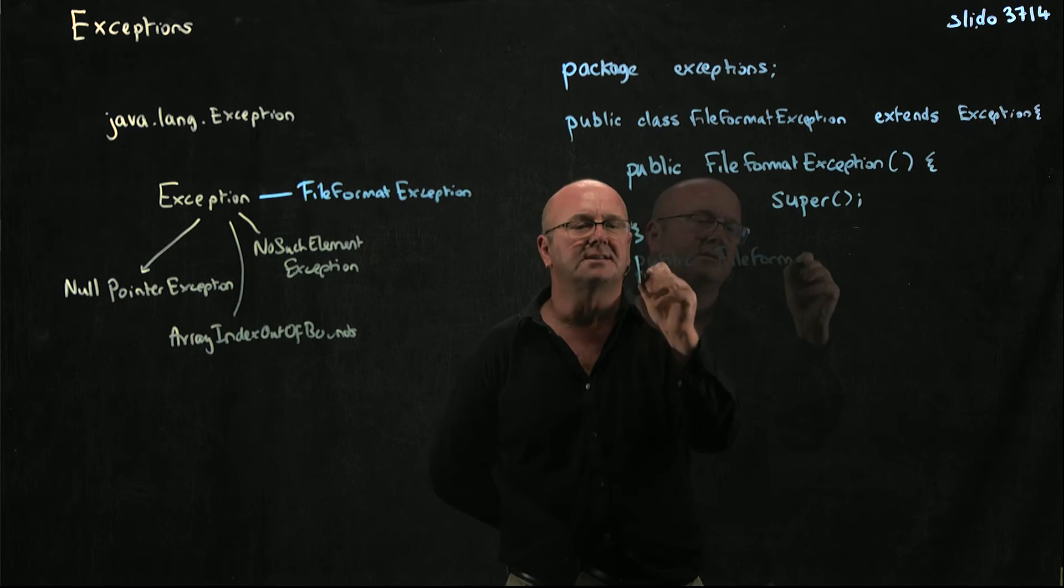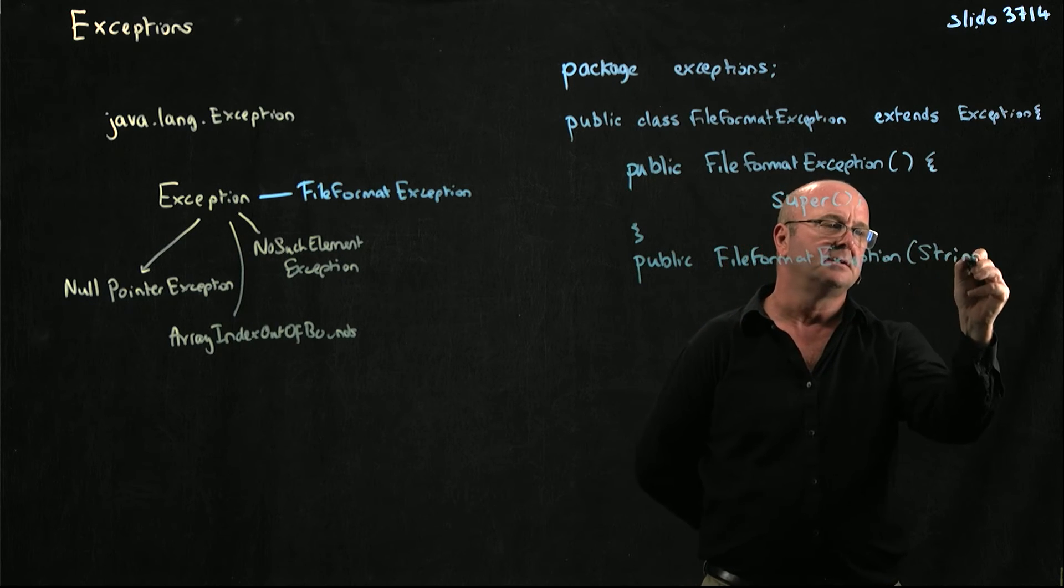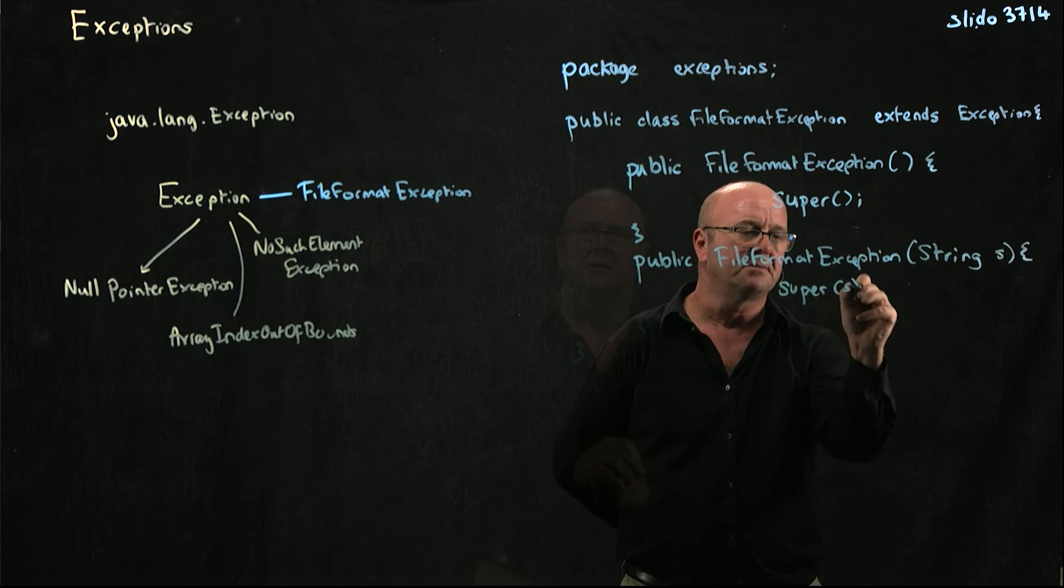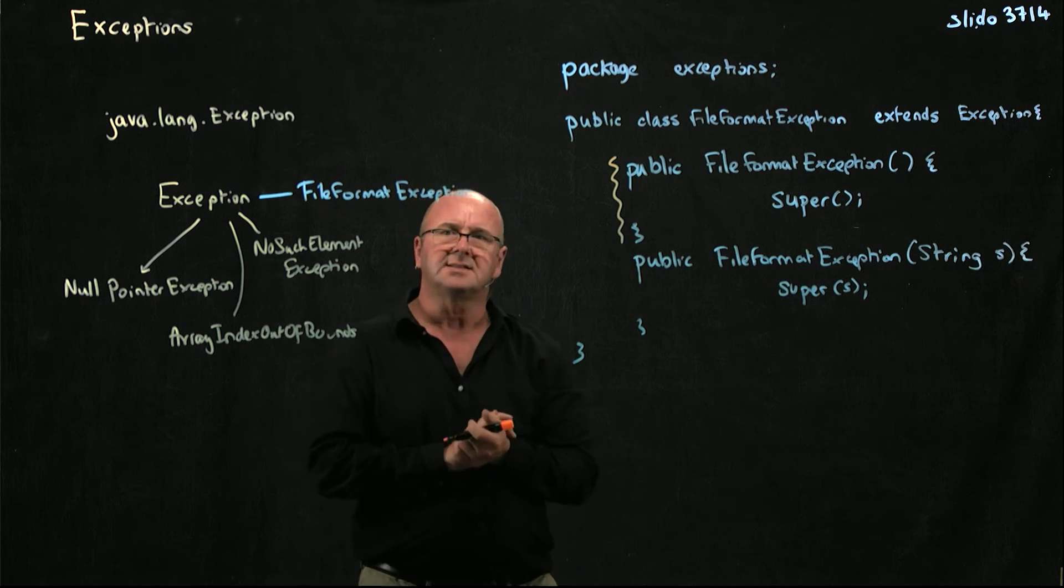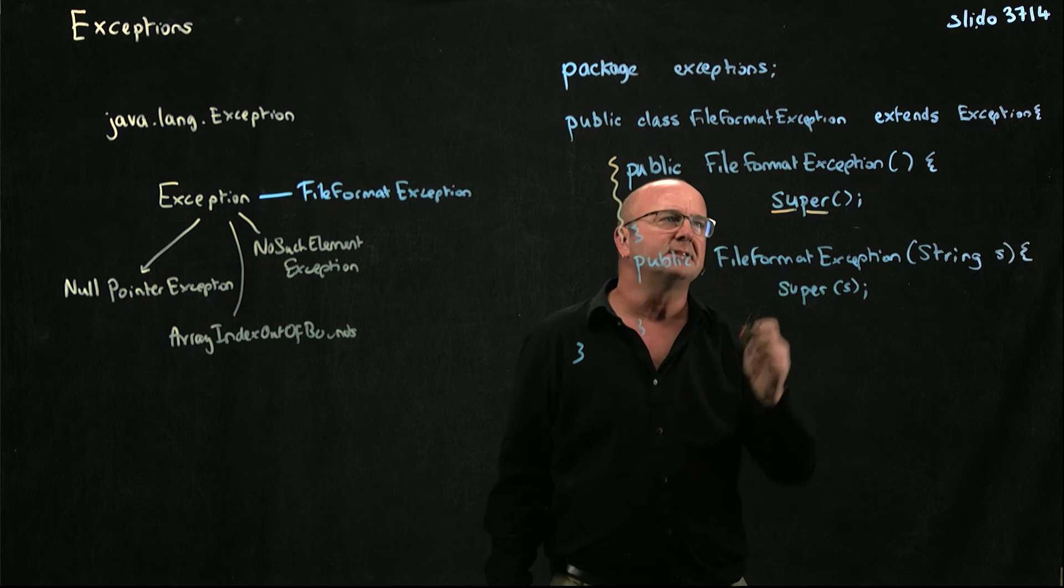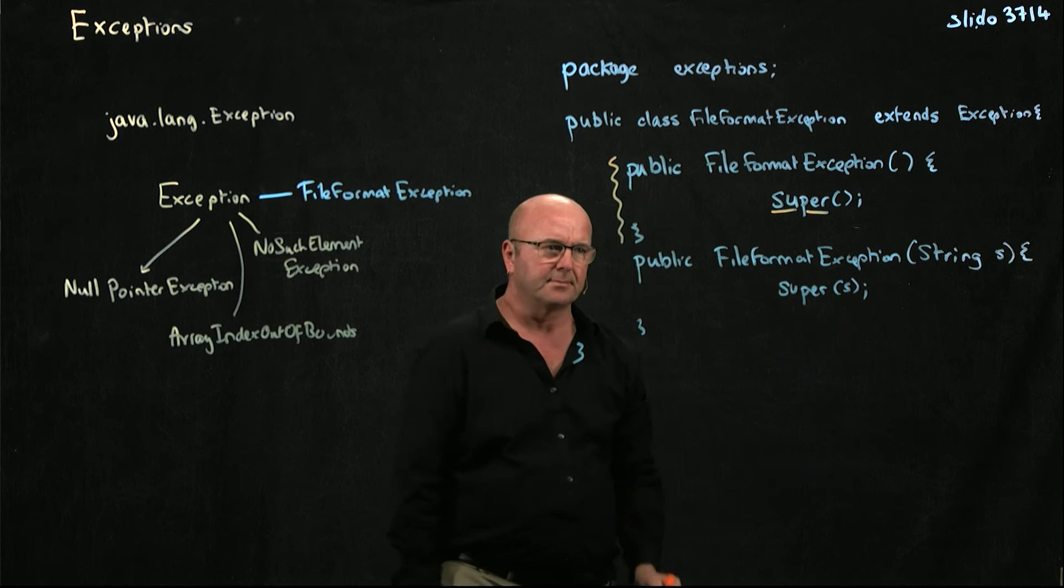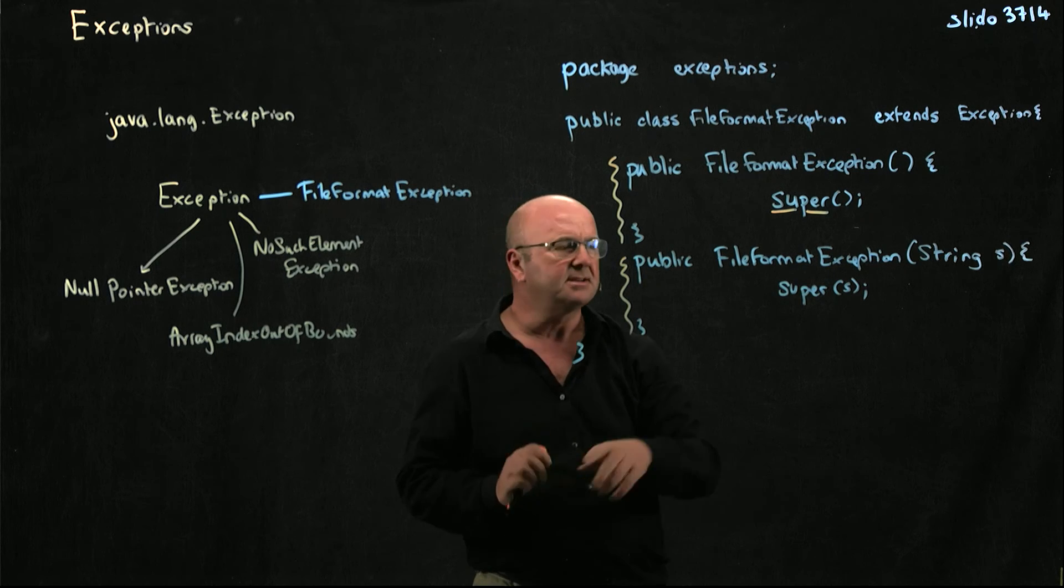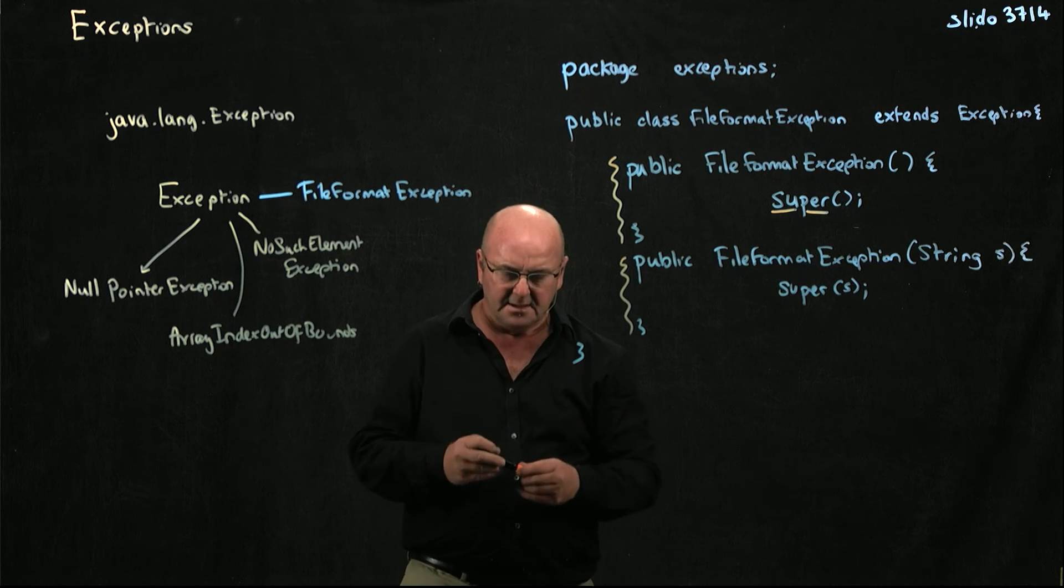The second constructor is going to take a string. We're going to take a string called s. And we're going to call super. And we're going to pass s in. So we have our default constructor. It doesn't take any arguments. And all it's doing is calling super. And super means if you're extending something, call the constructor for whatever you're extending. And then we have another constructor where we take a string and we say, you know what? I don't know how to handle the string. We're just going to let the exception class do it. That's it. That's our entire exception.